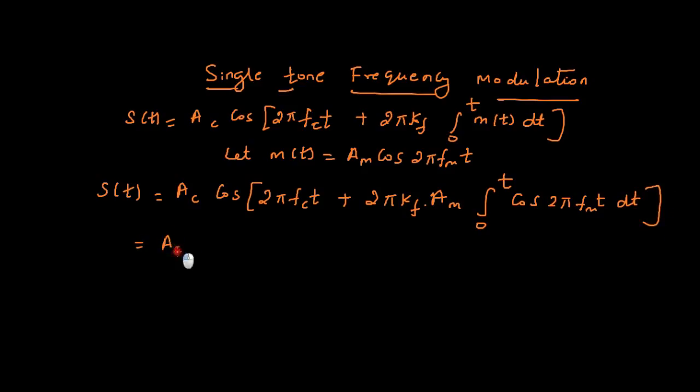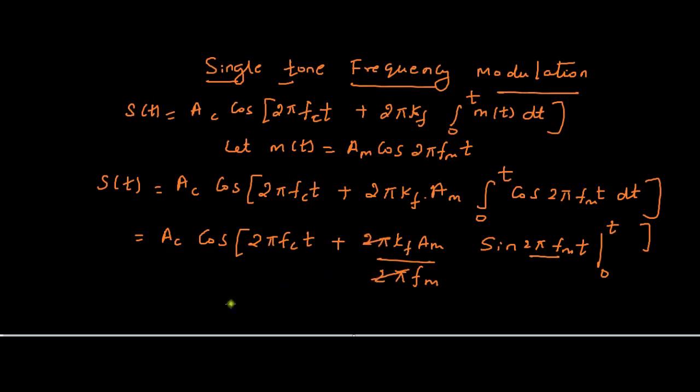This will be Ac cos(2πfct + 2πkf·Am). Integral of cos is sine. That will become sine 2πfmt. Since we are differentiating with t, we need to divide by 2πfm. And then, limits are 0 to t. Our final equation will become, this 2π will get cancelled with this. And then, sine 2πfmt minus sin of 0 is 0.